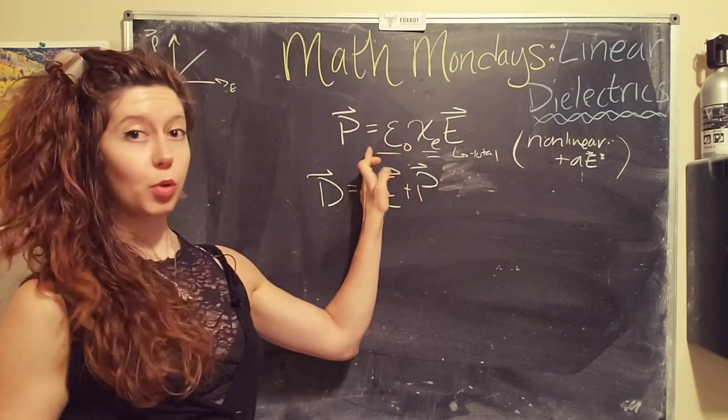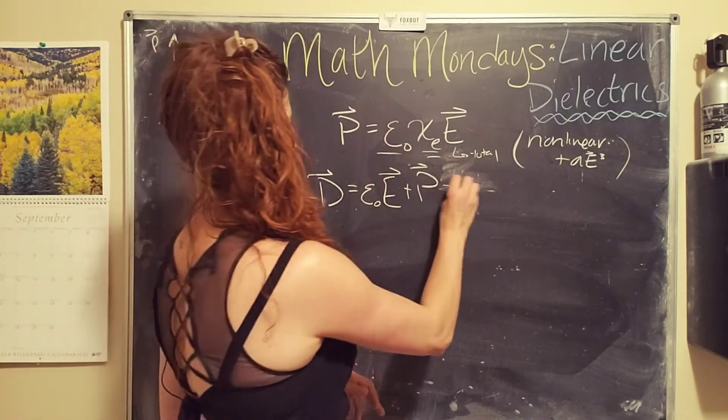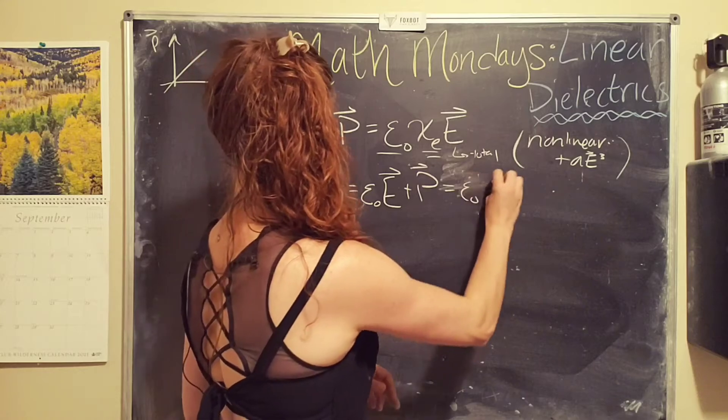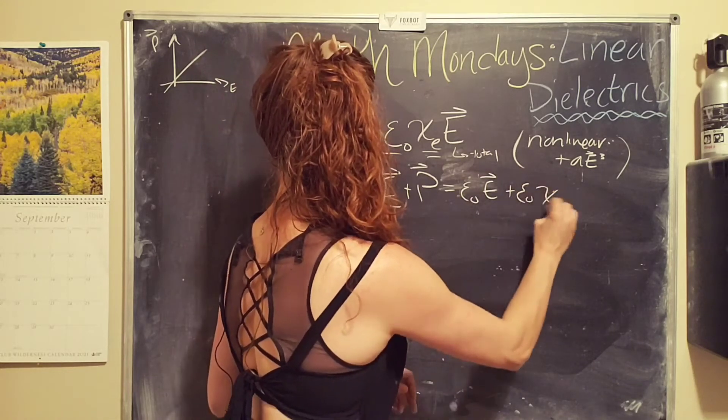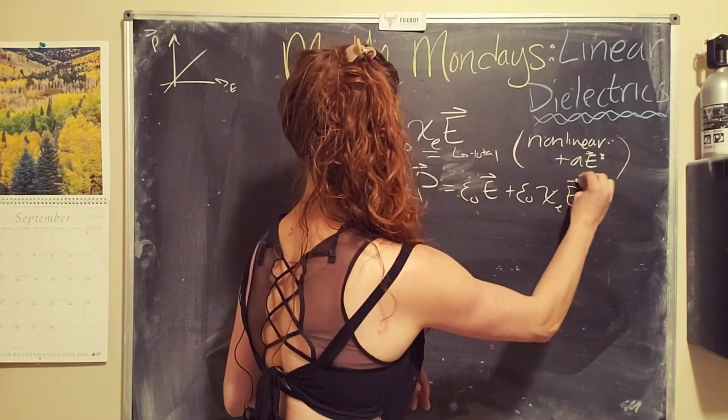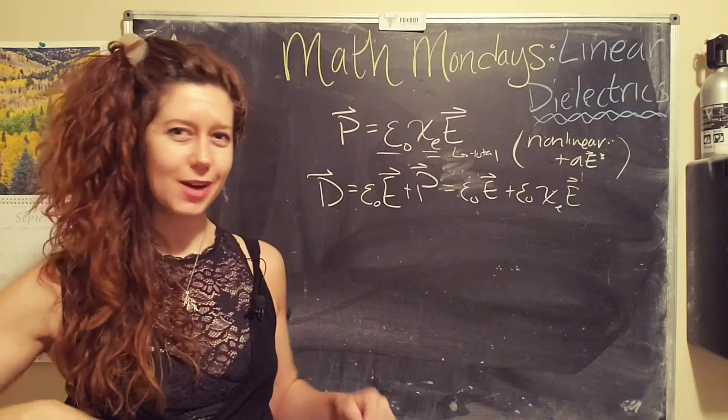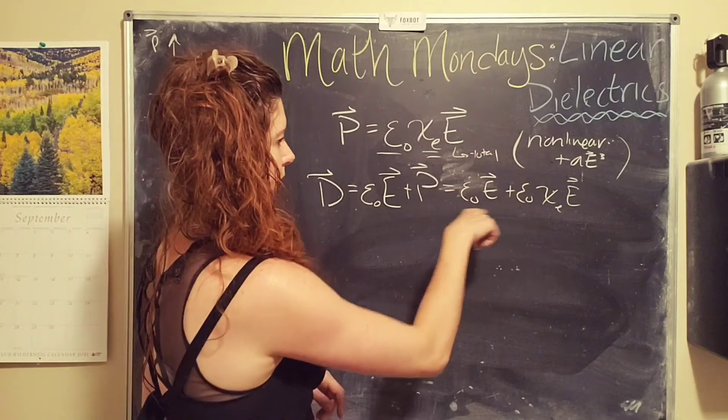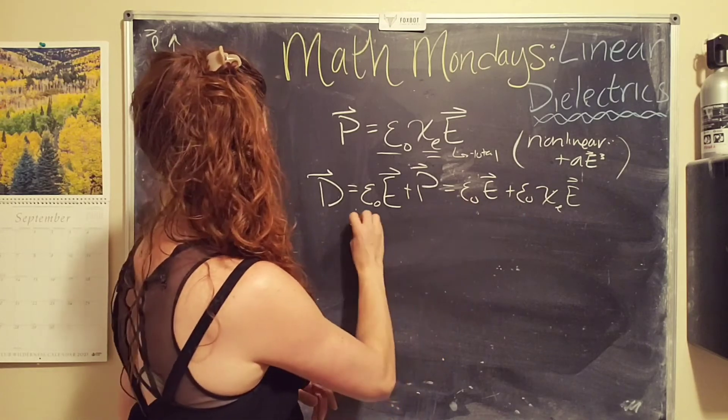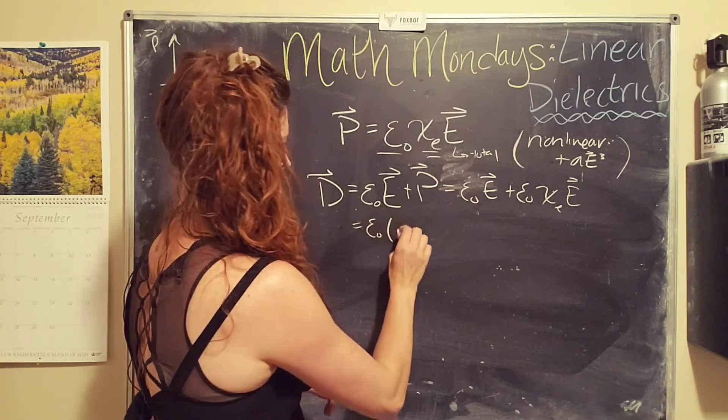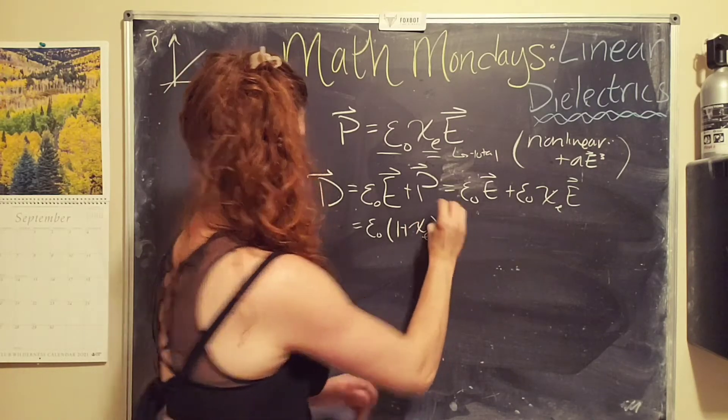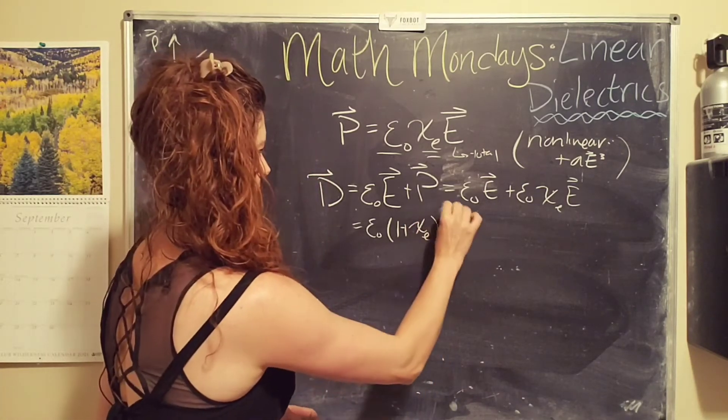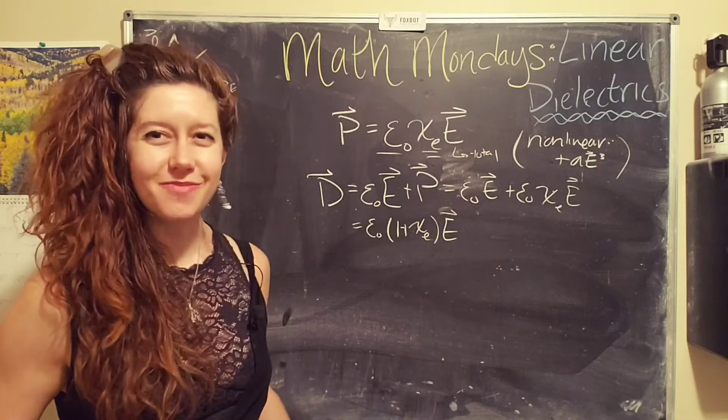And so let's replace the polarization with this equation. So epsilon nought times the total electric field plus epsilon nought, the susceptibility, times the electric field. Ooh, and we're going to simplify our equation. So we can pull out epsilon nought. We can also pull out E, epsilon nought, one plus the susceptibility times the electric field. That's a half arrow because it's a vector.